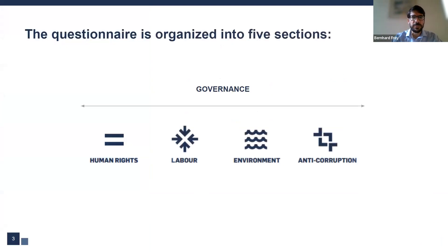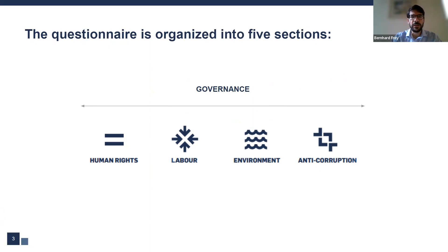The questionnaire of the Communication on Progress is organized in five sections: Governance, Human Rights, Labour, Environment, and Anti-Corruption. The Governance section provides a cross-cutting overview of the company's sustainability governance structure and processes, while the remaining four sections go into greater detail on topics connected to the ten principles of the UN Global Compact.